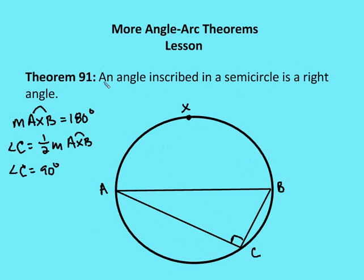Theorem 91: an angle inscribed in a semicircle is a right angle. If I have a diameter, that diameter cuts the circle in half. So the measure of arc AXB and the measure of arc ACB are both equal to 180 degrees. The measure of angle C is one half the measure of its intercepted arc, so the measure of angle C equals 90 degrees. Since arc AXB equals 180 degrees, angle C equals one half of 180, which is 90 degrees. An angle inscribed in a semicircle is a right angle.